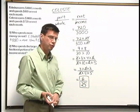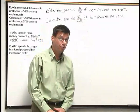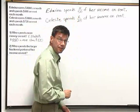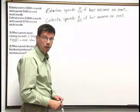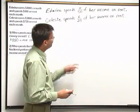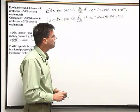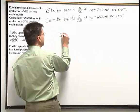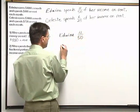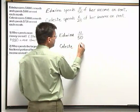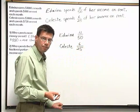Now let's compare the fraction we got for Edwina with the fraction for Celeste. Edwina spends 11 fiftieths of her income on rent, and Celeste spends 6 twenty-fifths of her income on rent. Who spends the larger fractional portion? We need to figure out which fraction is larger, but because their denominators are different, it's not easy to tell. In order to compare them, we want to write both fractions with the same common denominator.